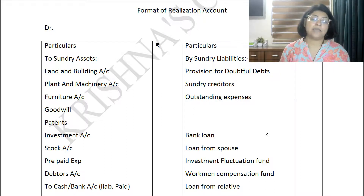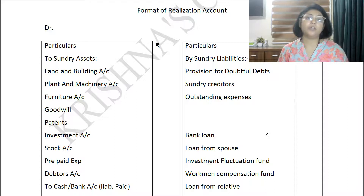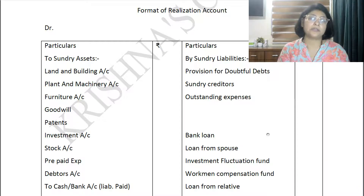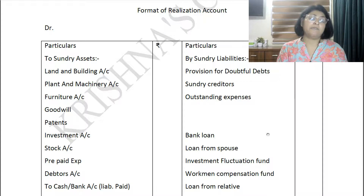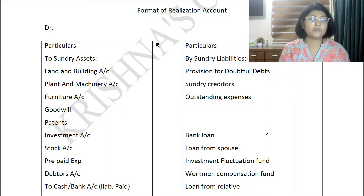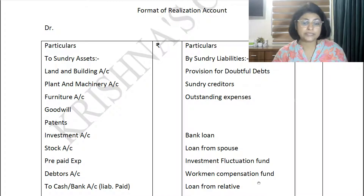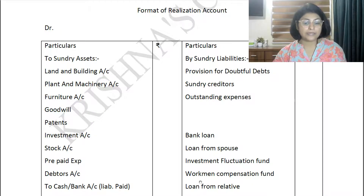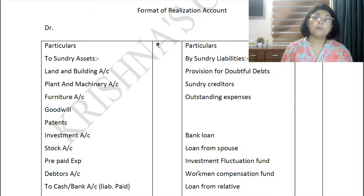On the credit side — what liabilities are transferred? Only outsiders' liabilities. A partner's loan, capital, or current account will not be transferred because a partner is not an outsider — he is the owner of the firm. But if a partner's wife or relative has given a loan to the firm, that should come here. That is why 'loan from spouse' and 'loan from relative' are written on the credit side of the Realization Account.